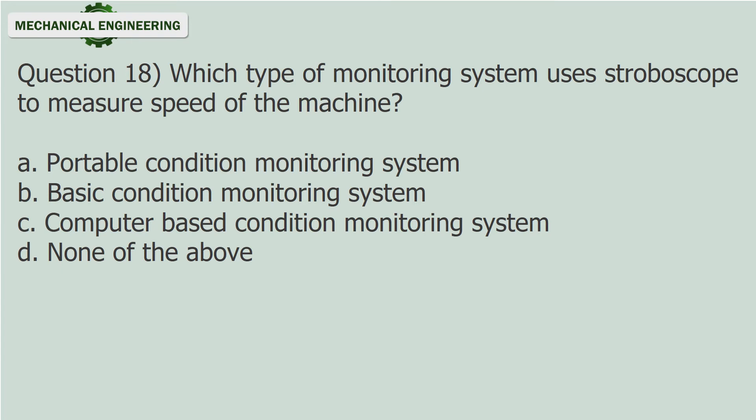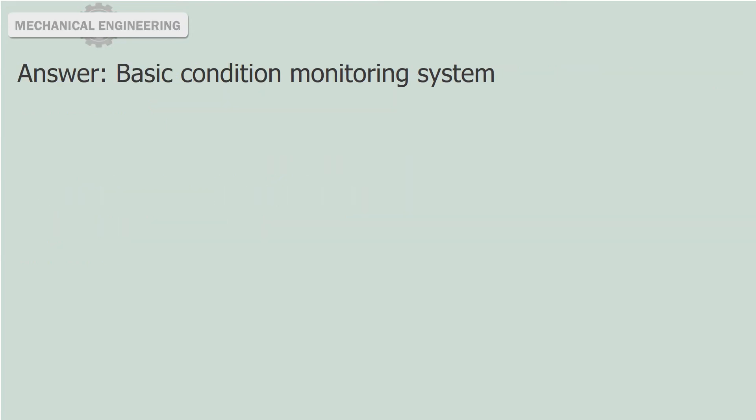Question 18: Which type of monitoring system uses stroboscope to measure speed of the machine? a. Portable condition monitoring system. b. Basic condition monitoring system. c. Computer based condition monitoring system. d. None of the above. Answer: Basic condition monitoring system.